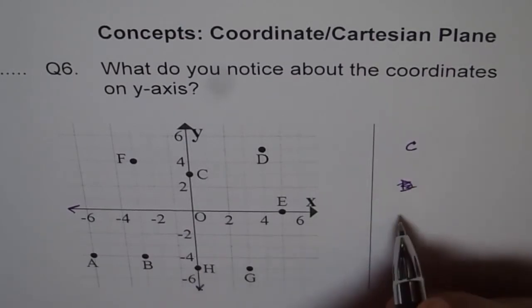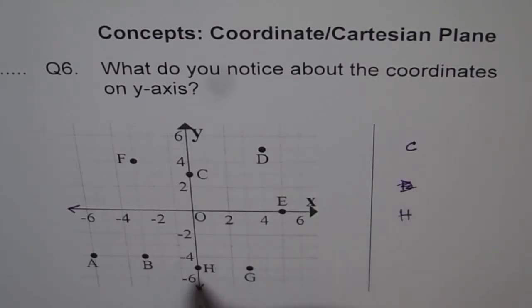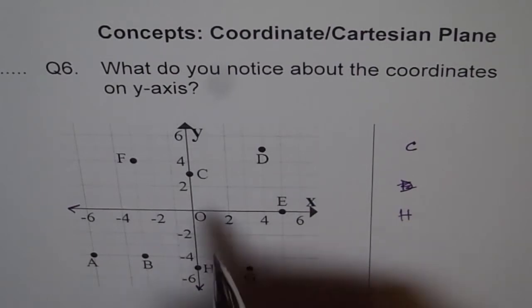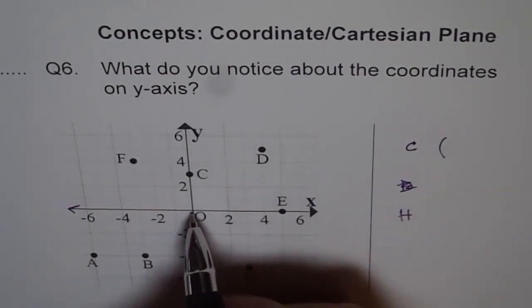Sorry, not D—H. Sorry, C and H. Can you write down the ordered pairs of C and H? C is 0 for the x value because you don't move left or right, but you move up 1, 2, 3.